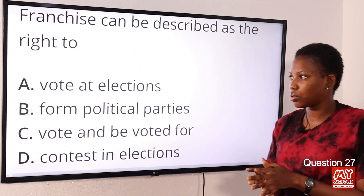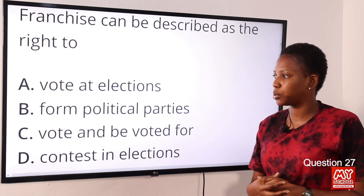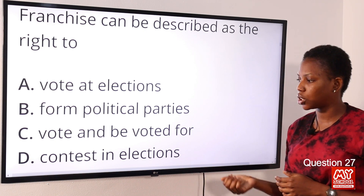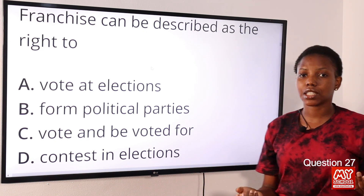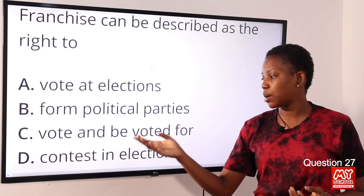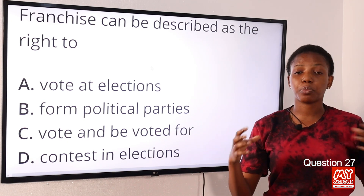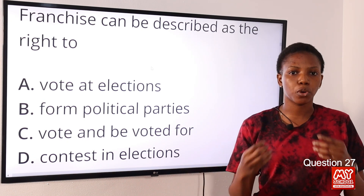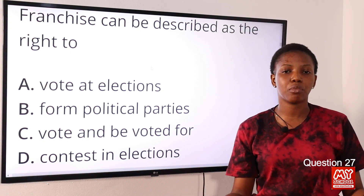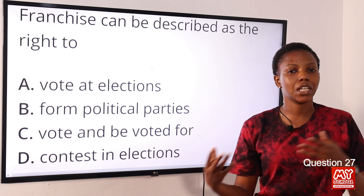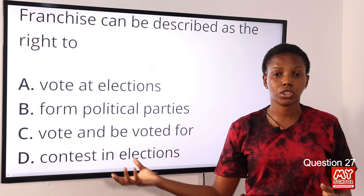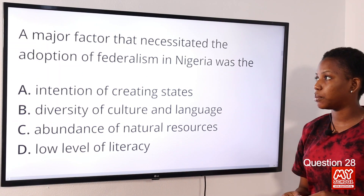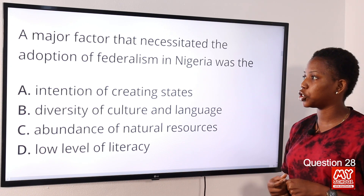Question 27: Franchise can be described as the right to — Option A: vote at elections. Option B: form political parties. Option C: vote and be voted for. Option D: contest in elections. The answer is Option C, vote and be voted for. Franchise or political franchise is the right to vote in public elections and be voted for during an election.